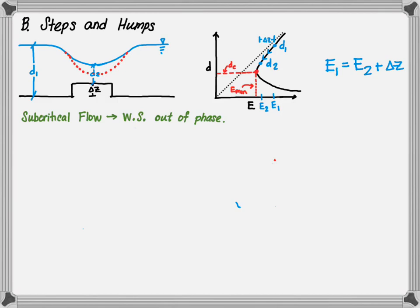The minimum energy will occur at critical depth — this is very important. Energy at point two can never be less than the minimum energy. Under subcritical flow, the depth at point one is always greater than the depth at point two, and the depth at point two must be greater than or equal to dc. The velocity at point one is less than the velocity at point two — the water speeds up through the step, which causes the drop in water surface elevation. The energy at point one must be greater than the energy at point two, and the energy at point two must be greater than or equal to the minimum energy.